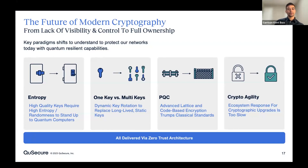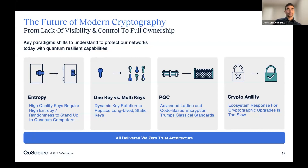We'll start with QSecure's vision of what modern cryptography is going to look like. You can see here a few concepts illustrated on this slide: entropy, one key versus multiple keys, PQC, and crypto agility. QSecure really views the future of modern crypto as the ability to have an abstraction layer and full visibility and control over all of these elements, delivered via a zero trust architecture.